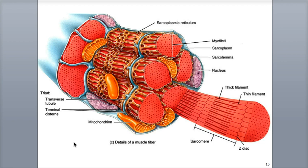The fluid moving through the T-tubules is interstitial fluid from the external environment surrounding the fiber. This fluid allows the muscle action potential to move quickly along the sarcolemma and down into and through the network of T-tubules, exciting all parts of the muscle fiber at the same time.